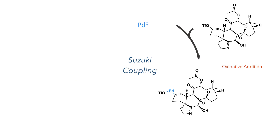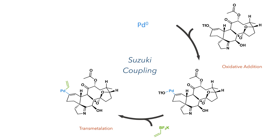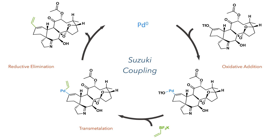In the next step, the compound took part in a Suzuki reaction. Palladium(0) first undergoes oxidative addition into the carbon-triflate bond, and this undergoes transmetallation with potassium vinyl trifluoroborate. With both carbon groups now coordinated to the palladium, a reductive elimination can take place, forming the desired carbon-carbon bond.